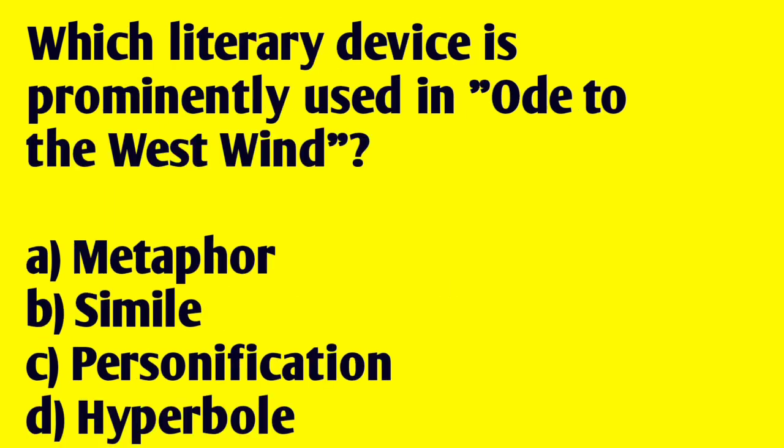Next, which literary device is prominently used in Ode to the West Wind? A. Metaphor, B. Simile, C. Personification, D. Hyperbole. The answer is personification.